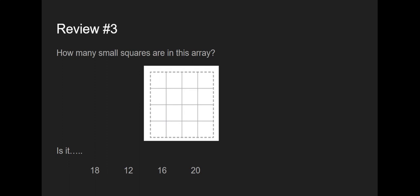Review number 3. How many small squares are in this array? Well, we have 1, 2, 3, 4 rows. And there's 4 squares across. 4 times 4 equals? Is it 18, 12, 16, or 20? Well, let me skip count by 4s. 4 plus 4 is 8. Plus another 4 is 12. Plus another 4 is 16. So my correct answer would be 16 square units.